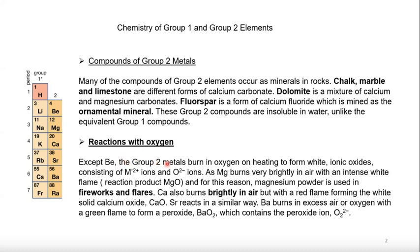Except beryllium, all group two metals burn in oxygen on heating, giving ionic oxides. Magnesium burns very brightly and is used in fireworks. Calcium burns brightly with a red flame, and strontium burns with a green flame. Barium forms a peroxide product — the peroxide anion has a minus one oxidation state, unlike the normal oxide which is minus two.